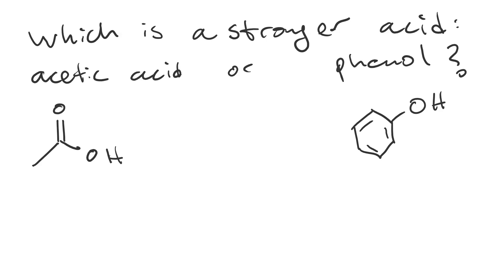The stronger acid will have the more stable conjugate base, which is an anion in both cases. The conjugate base of acetic acid when it's deprotonated is shown here, acetate. And the conjugate base of phenol, when it is deprotonated, is phenylate, shown at the bottom right.